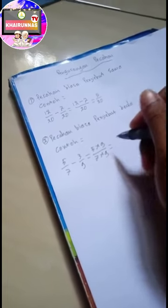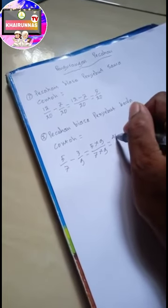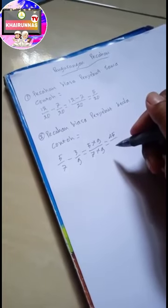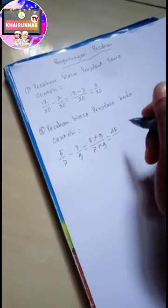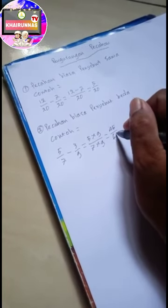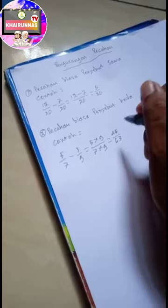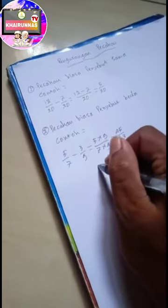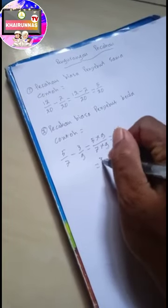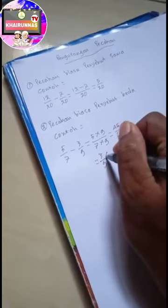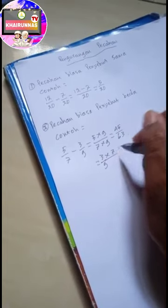5 kali 9 adalah 45. 7 dikali 9 hasilnya? 7 kali 9 hasilnya 63. Ini hasilnya ya, hasil dari 5 per 7. Sekarang yang kedua yaitu 3 per 9 dikali 3 dikali 7.